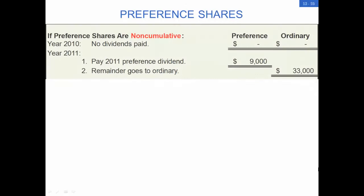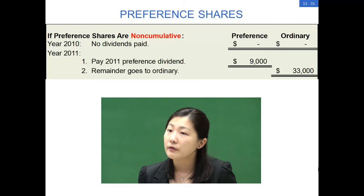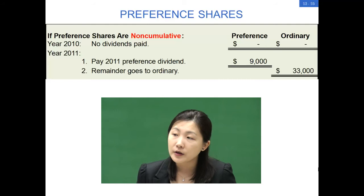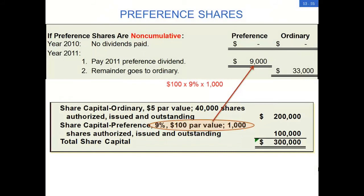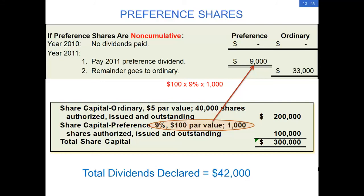If the preference shares are non-cumulative, then the preferred stockholders do not have the rights to the missed dividends in 2010. However, they get the first distribution of the dividends declared in 2011. The dividend for the preference shares in 2011 is calculated as: $100 par value × 9% × 1,000 shares = $9,000. Since $42,000 in dividends were declared in 2011, the preferred stockholders would receive the first $9,000 and the remaining $33,000 will be divided among the common stockholders.